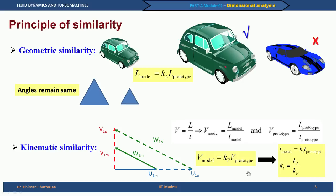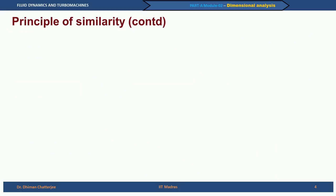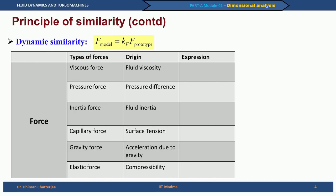There is a third category of similarity, perhaps the most stringent one, called dynamic similarity. Dynamics deals with not just motion but the causes of motion. Here we are talking about similarity of forces between the model and the prototype. In fluid mechanics we encounter different types of forces: viscous forces due to fluid viscosity, pressure force because of pressure difference, inertial force because of fluid inertia, capillary force due to surface tension, gravity force because of acceleration due to gravity, and elastic force because of fluid compressibility.